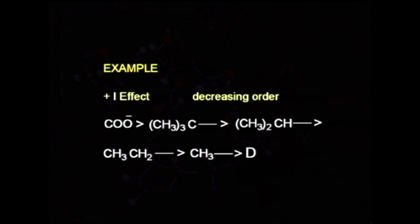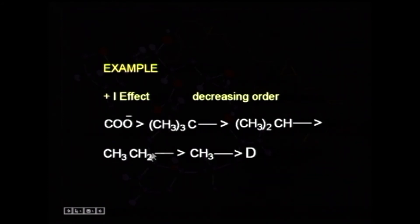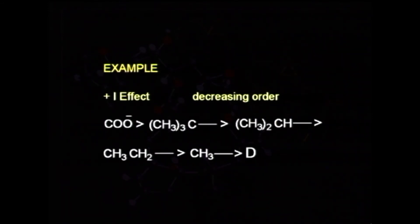As we substitute hydrogen atoms one by one with methyl groups, as the number of methyl groups bonded to a carbon atom increases, the electron-donating power increases. Hence the tertiary butyl group shows the maximum electron-donating or plus-I effect nature.